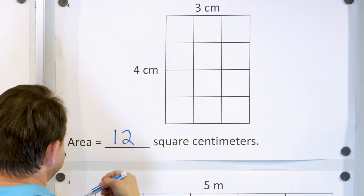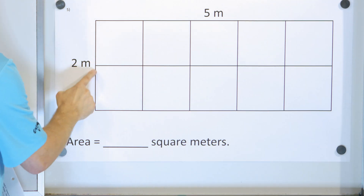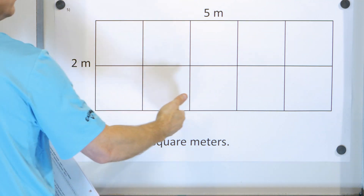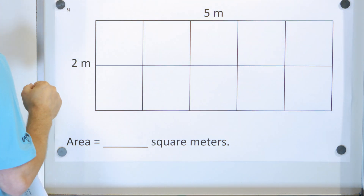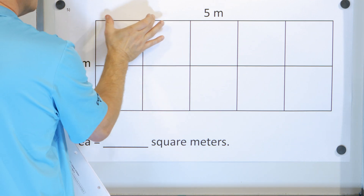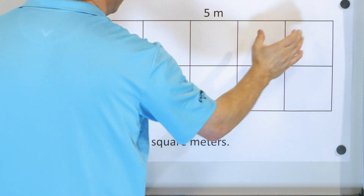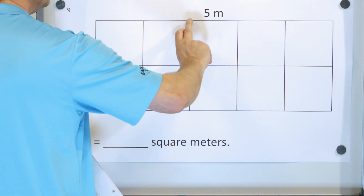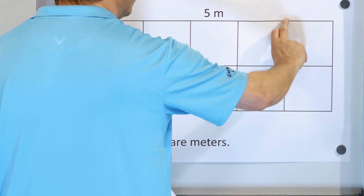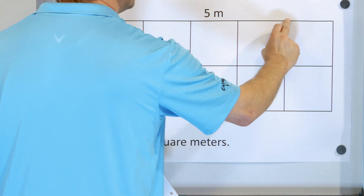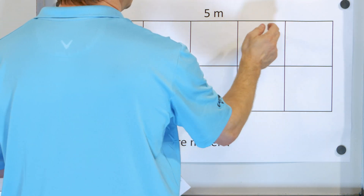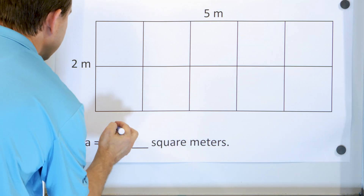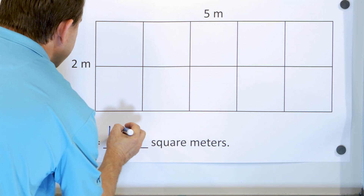Our last problem is a two meter tall rectangle by a five meter wide rectangle — maybe the backyard of your house. Two meters by five meters. We chop it up: one, two, three, four, five meters wide and one, two meters tall. Every square is a meter in width and a meter in height, so each is a square meter. How many do we have? One, two, three, four, five, six, seven, eight, nine, ten square meters.